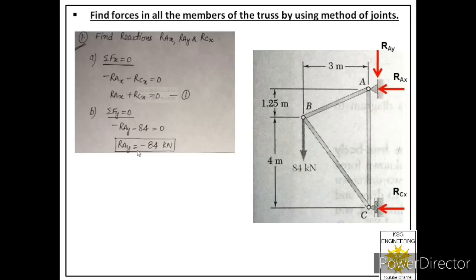We got a negative value for RAY. This negative value tells us that the direction we assumed at the start is not correct — it is actually acting in the opposite direction. So for further calculations we will consider RAY acting in the upward direction, not downward.